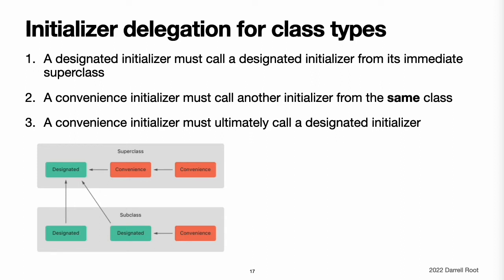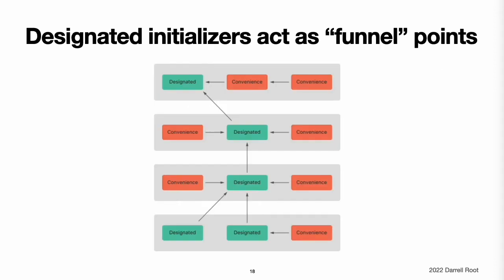Note: these rules do not affect how users of your classes create instances of each class. Any initializer in the diagram can be used to create a fully initialized instance of the class they belong to. The rules only affect how you write the implementation of the class's initializers. This figure shows a more complex class hierarchy for four classes, illustrating how the designated initializers in this hierarchy act as funnel points for class initialization, simplifying the interrelationships among classes in the chain.